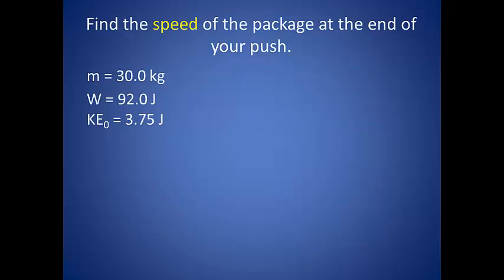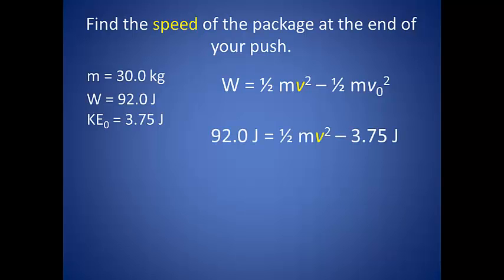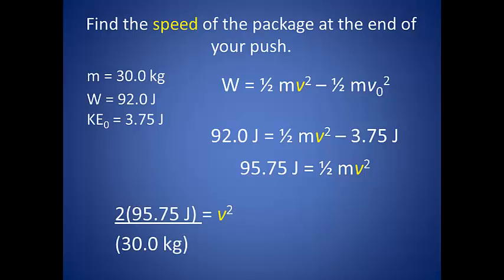So find the speed of your package at the end of your push. From our work energy theorem, we know that the net work done is equal to the change in kinetic energy. We found the net work in the previous example, so now all we really need to do is find the change in kinetic energy. Earlier, we found the kinetic energy of the box on the conveyor belt to be 3.75 joules. So we have our initial kinetic energy and our net work done, which fits nicely into what we need to know. This gives us 95.75 joules as our final kinetic energy. We were given the mass, so we can plug that in and rearrange a bit and find the final velocity of the box as 2.52 meters per second.